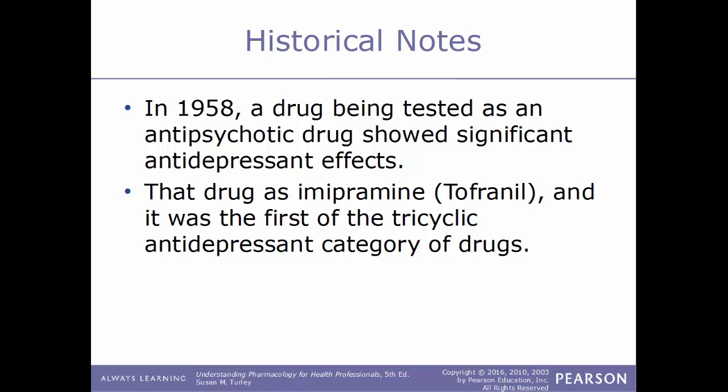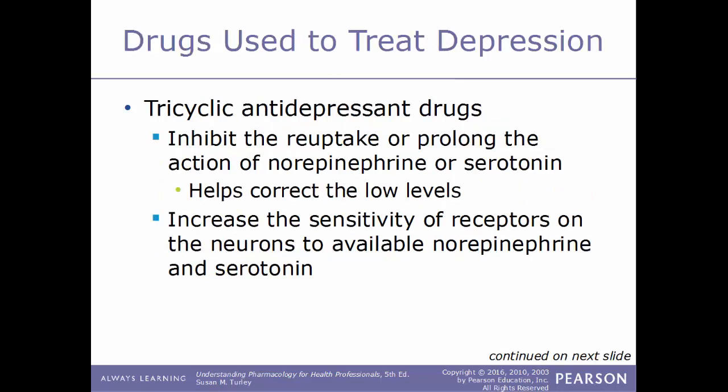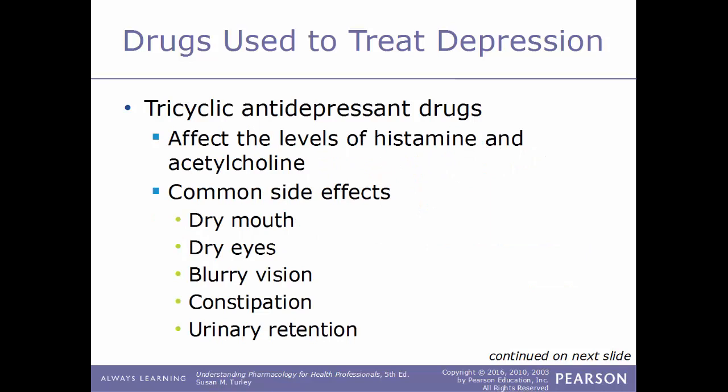In 1958, a drug being tested as an antipsychotic showed significant antidepressant effects. That drug was imipramine (Tofranil), the first tricyclic antidepressant. Tricyclic antidepressants inhibit the reuptake of norepinephrine and serotonin, prolonging their action and correcting lower levels of these neurotransmitters. They also increase the sensitivity of neuronal receptors to available norepinephrine and serotonin, and can affect levels of acetylcholine and histamine.